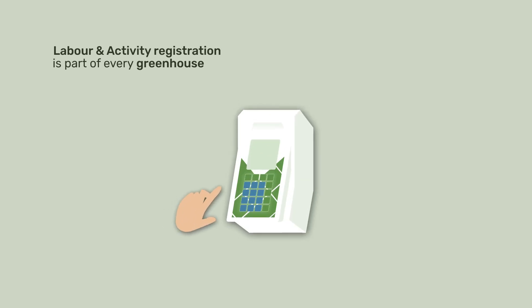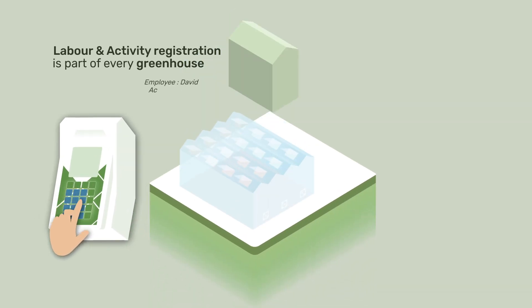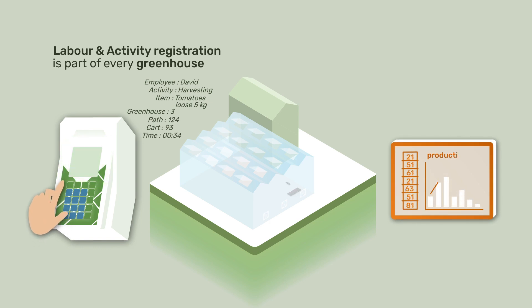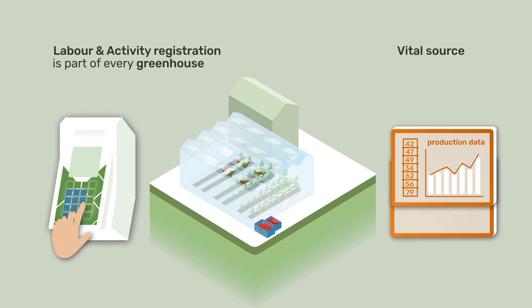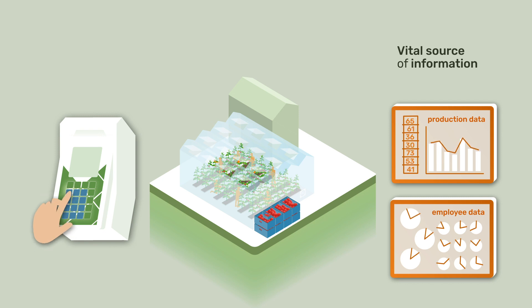Labor and activity tracking is an integral part of every greenhouse. It creates insight and control in the productivity of employees. It's a vital source of information to monitor and optimize production, quality, and plant health.